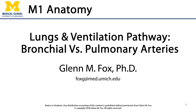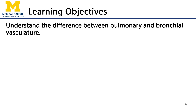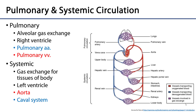Let's talk about the differences between bronchial and pulmonary arteries. In this video, we'll discuss pulmonary versus bronchial vasculature. To understand pulmonary versus bronchial vasculature, we need to understand the fundamental difference between the pulmonary and systemic circuits — you might call them circuits, circulations, or loops; they all mean the same thing.